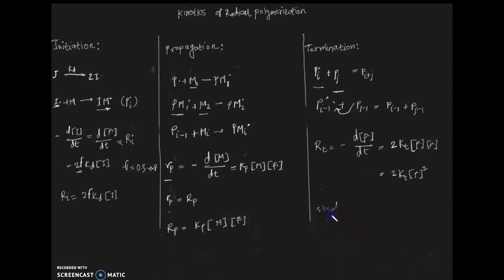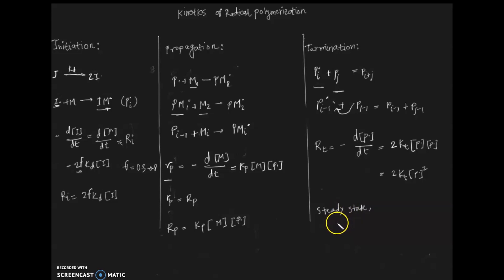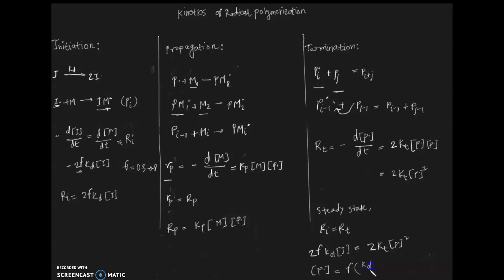Under the steady state condition, the rate of forward reaction equals the rate of backward reaction. In polymerization, this means the rate of initiation equals the rate of termination. From this equality, we can derive the value of the polymer radical concentration.